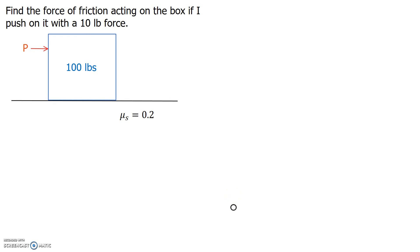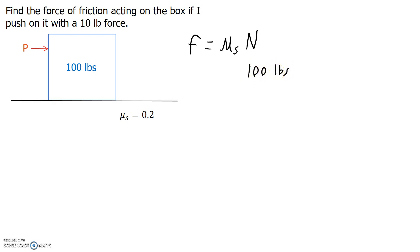The first one looks like this: find the force of friction acting on the box if I push on it with a ten pound force. The way that most students originally approach this is they say friction is equal to mu static times the normal force. Here the normal force is equal and opposite of the hundred pounds, and mu static is given at 0.2. So the friction force is equal to twenty pounds.